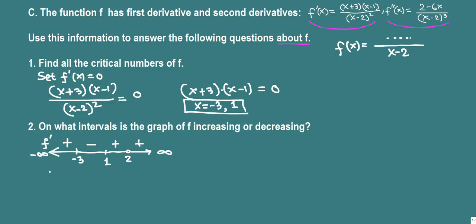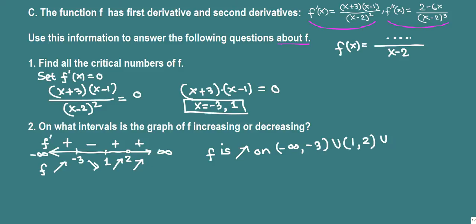Using the increasing/decreasing test: a positive derivative means the function is increasing, and a negative derivative means decreasing. So the function is increasing on (negative infinity, negative 3), (1, 2), and (2, infinity) — noting that 2 is not in the domain so we cannot combine the last two intervals. The function is decreasing on (negative 3, 1).